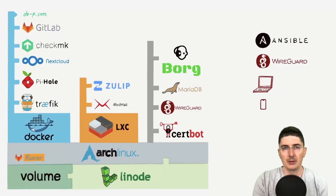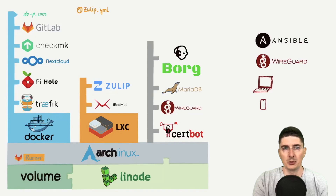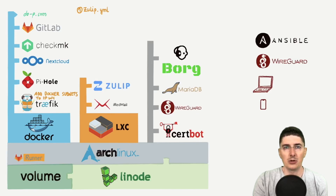Before we could get this application to work, we had to make a few tweaks. First, in traffic config for Zulip, the only whitelisted subnet was the one from WireGuard. Because our application would try to connect to Zulip from inside a Docker container, we had to whitelist all Docker subnets.